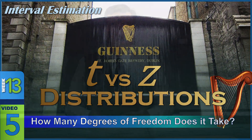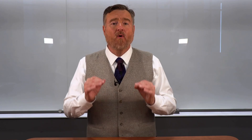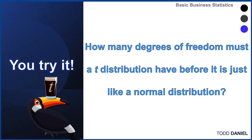How many degrees of freedom must a t-distribution have before it is just like a z-distribution? How large does our sample size need to be before our t-distribution models a normal curve?